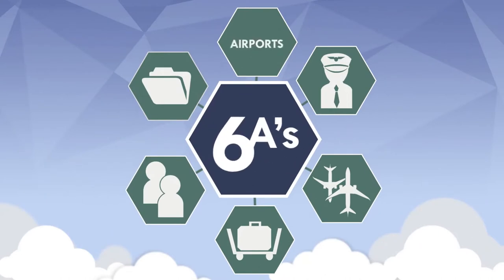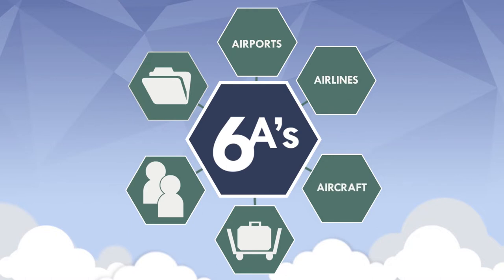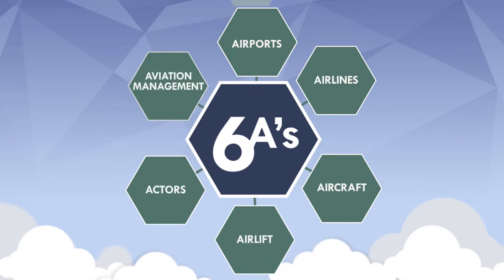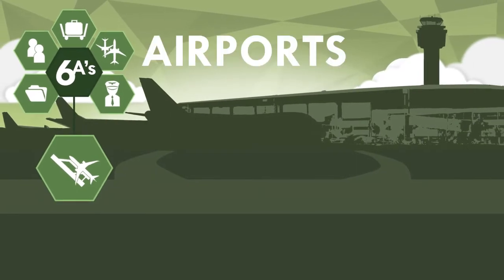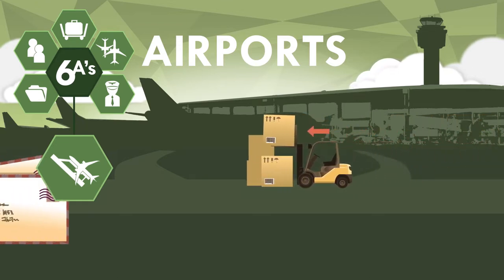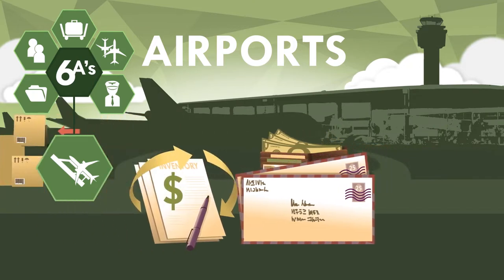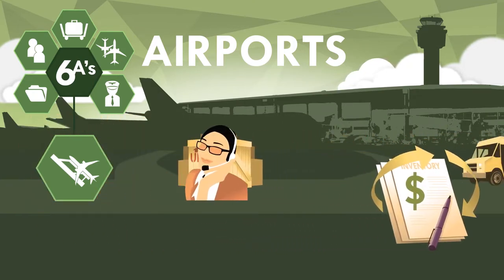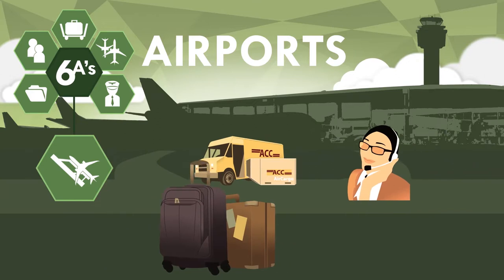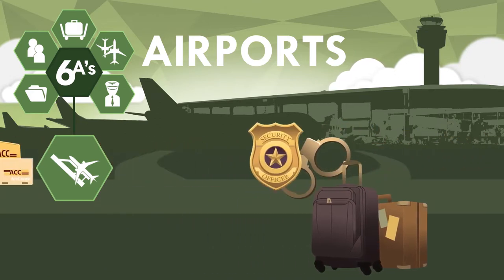The six A's includes airports, airlines, aircraft, airlift, actors, and aviation management. Let's take a look. Airports represent many factors associated with the safety and security of the ecosystem. Considerations include ground handling, mail, retail, brokers, freight forwarders, agents, commercial cargo, passenger baggage, and security.